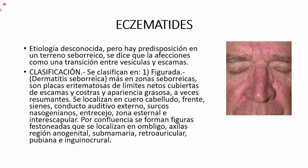Y debajo hay un eritema. ¿Qué son las eczematides? No se conoce la etiología, es desconocida, pero se presenta cuando hay una predisposición, un terreno de piel seborreica, como vemos en la foto. Se dice que las afecciones son una transición entre vesículas y escamas, pero cuando hay eczematides no podemos visualizar la vesícula, por eso se dice que es una transición.